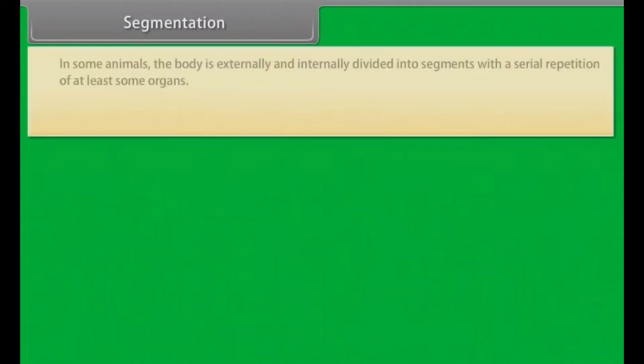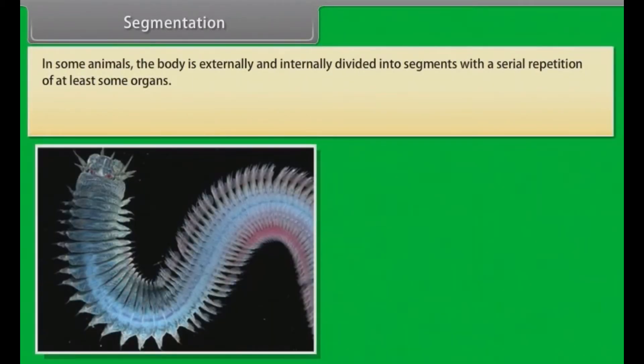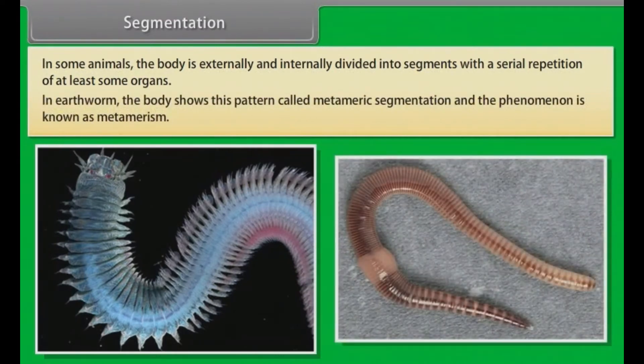Segmentation. In some animals, the body is externally and internally divided into segments with a serial repetition of at least some organs. In earthworm, the body shows this pattern called metameric segmentation and the phenomena is known as metamerism.